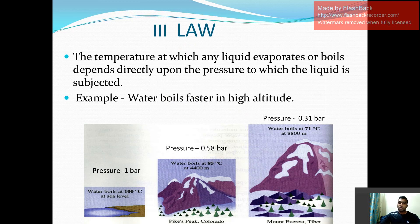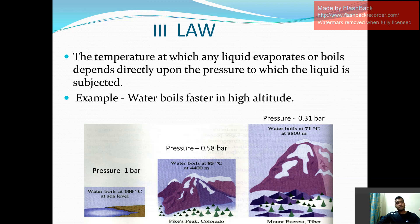We know that water boils at 100 degree Celsius. Water will only boil at 100 degree Celsius when the pressure is 1 bar. If the pressure is less than 1 bar, your boiling point of water will reduce. If the pressure is less than 1 bar, your water can boil at 85 degree Celsius also.